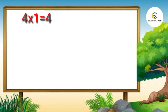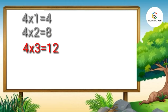Four ones are four. Four twos are eight. Four threes are twelve. Four fours are sixteen.